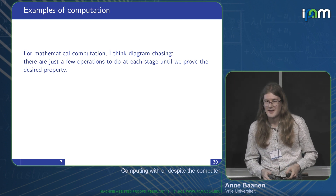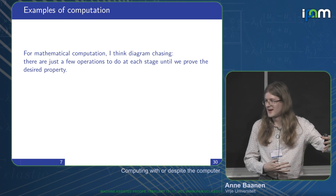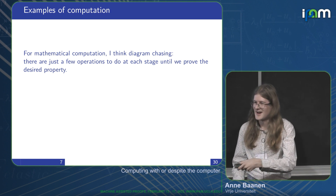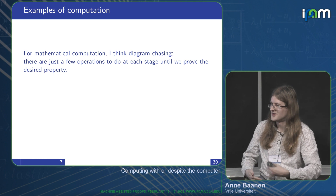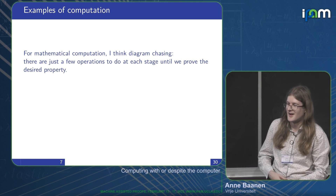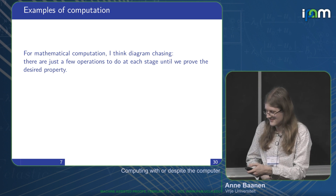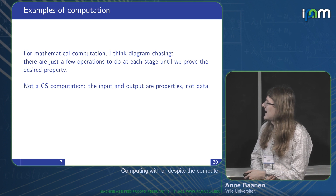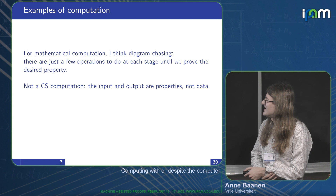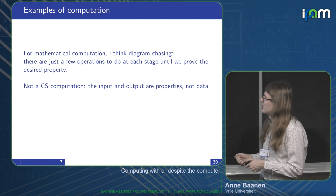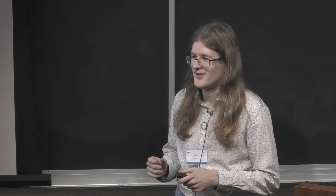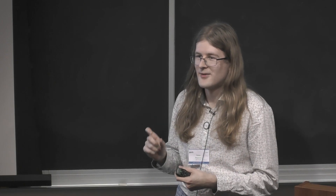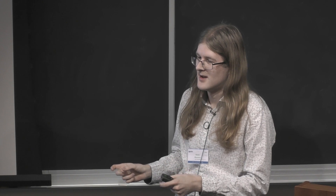Something much harder to make into a computer-science-style computation is diagram chasing in category theory. You're given some diagram, you know facts about some of the arrows, and you kind of glue together the arrows. At each step you have a few arrows you can learn new things about, you just continue figuring out new things until you've proven what you want. One important difference is that we're working with properties instead of data — in Lean, propositions are different from data: whatever proof you have, they're all equal anyway.